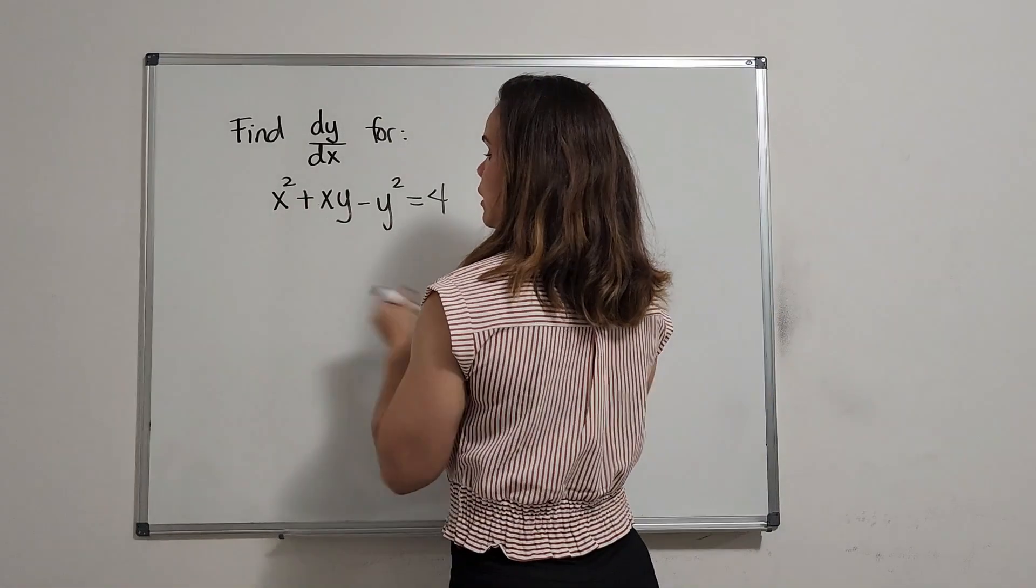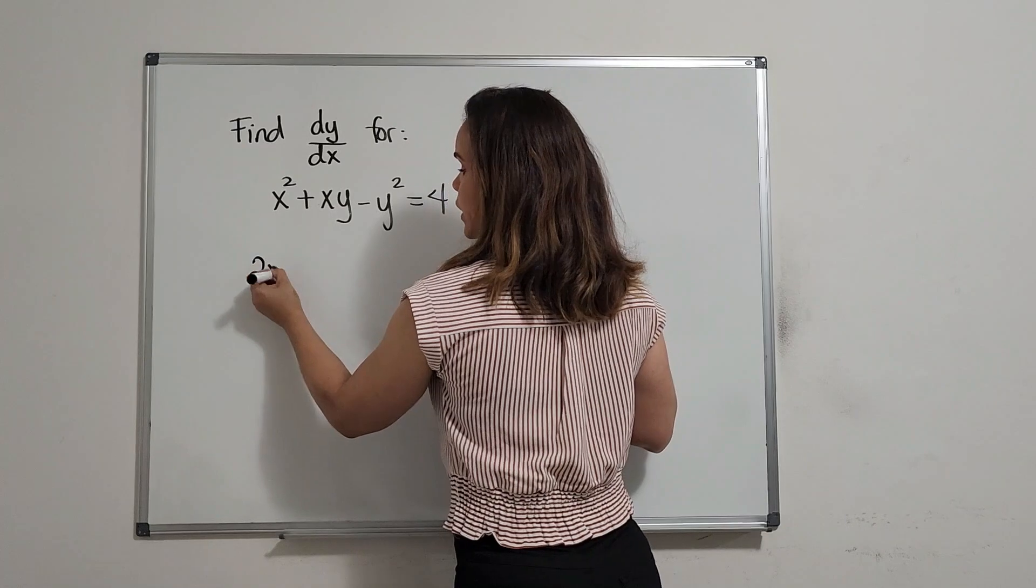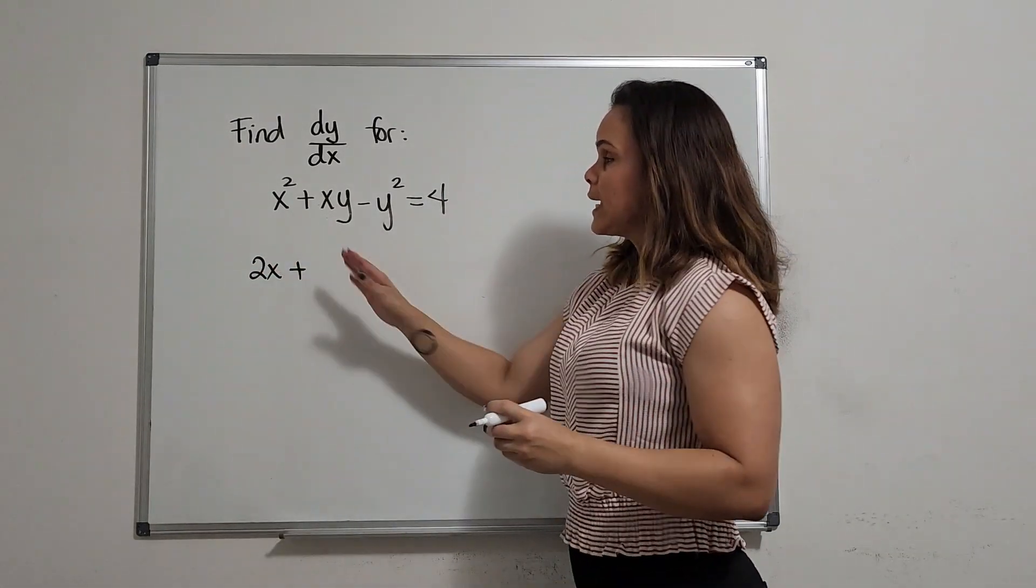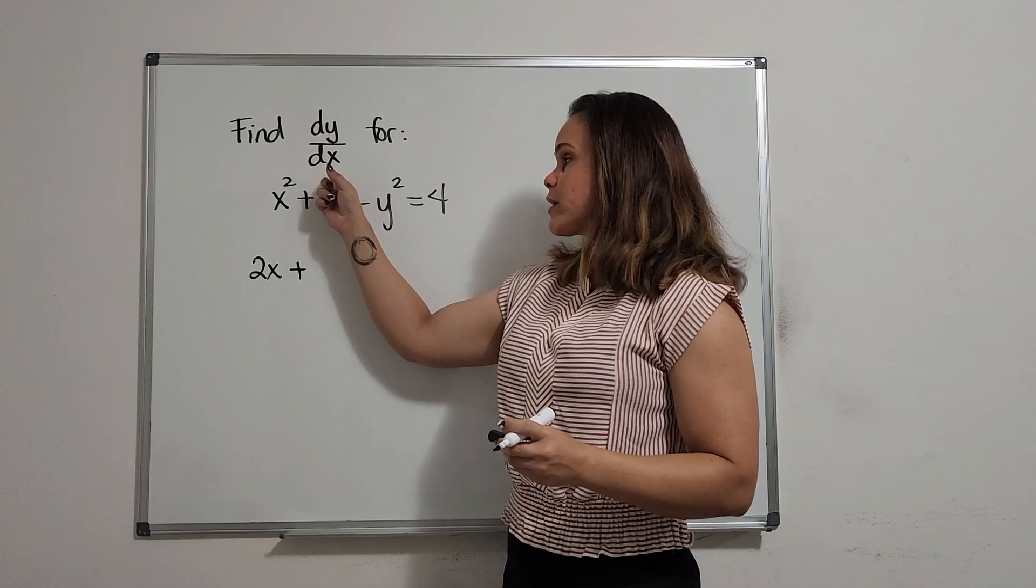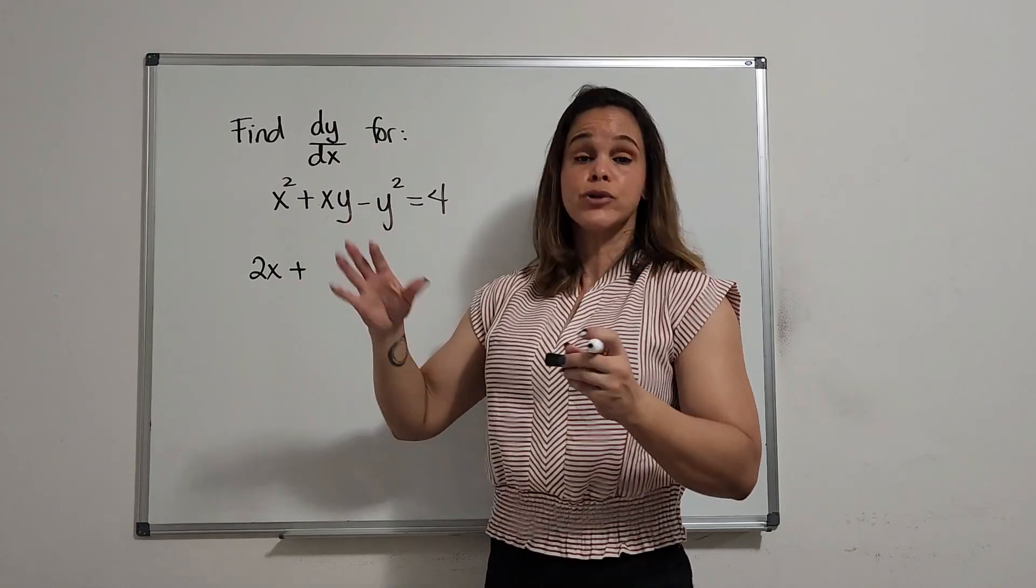For x squared, the derivative of x squared is going to be 2x. Plus, we have a plus here, and we have a product, x times y. So we use the product rule.